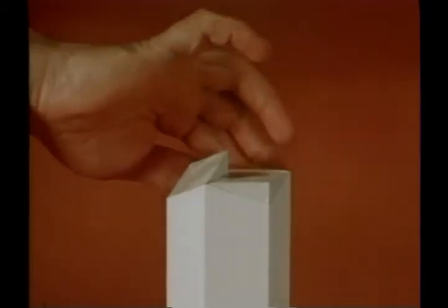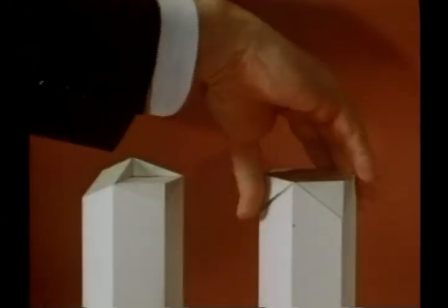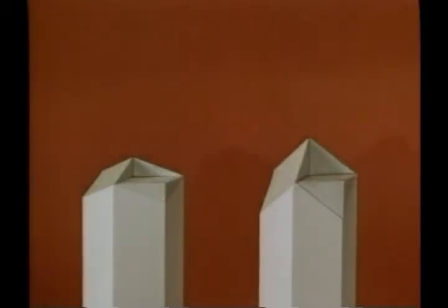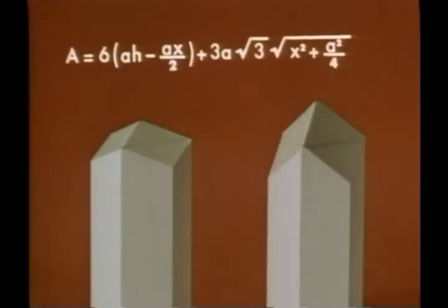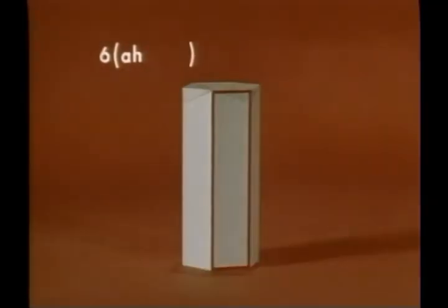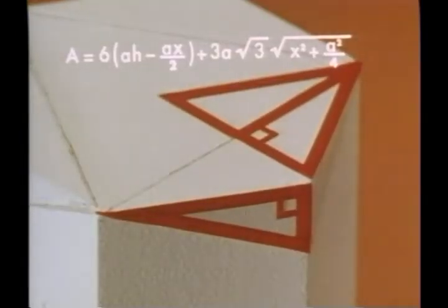This is easy to see. If a piece is cut off one place and put back on at another, the volume does not change. But as this distance changes, the shape of the prism and the area of its surface change. If this distance is called x, this is the formula for the surface area. It consists of the areas of the six rectangular sides, less the triangular pieces, plus the areas of the three rhombic ends, which can be calculated by means of the Pythagorean theorem.